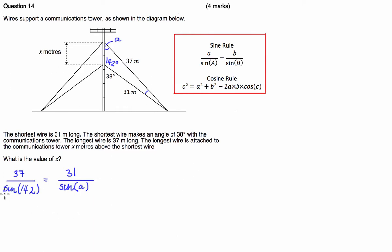So what we're going to do is rearrange this formula so we can just solve for A, and we're going to find that A is going to be equal to the inverse or arc sine of 31 times sine of 142, all divided by 37. And what we get guys is an angle which is equal to 31 degrees.